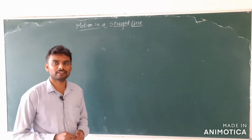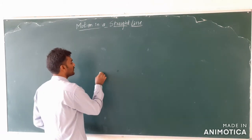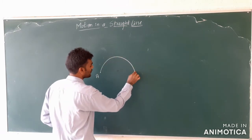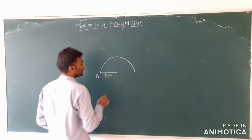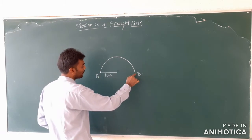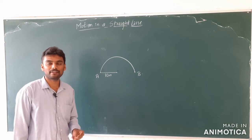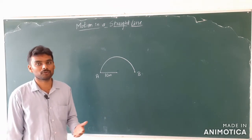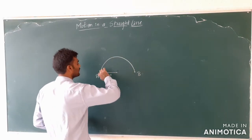Now, one more easy example that I want to give before I proceed to the next topic is as follows. Assume that a particle starts from point A and moves in a semicircular path of radius 10 meters. It starts from point A and the motion ends at point B. The radius of the semicircular path prescribed by the body is 10 meters. What is the distance travelled by the body and what is the displacement of the body? Distance travelled by the body is the length of the path.